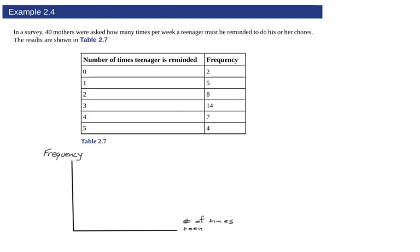We're going to put our frequency and number of times teenagers reminded. Here we have the y axis, which is typically our dependent variable, and the x axis is our independent variable. When we label that y axis, notice 14 is the largest value, so there's no need to go beyond that.